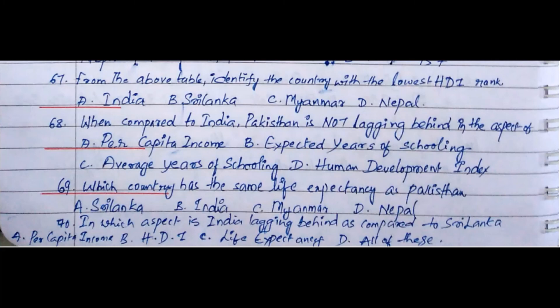Question 69: Which country has the same life expectancy as Pakistan? Option A. Sri Lanka, Option B. India, Option C. Myanmar, Option D. Nepal. The answer is Option C. Myanmar.